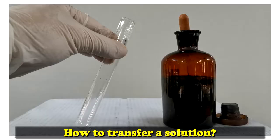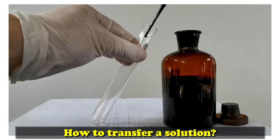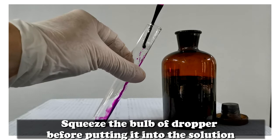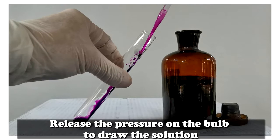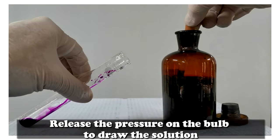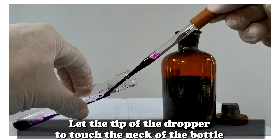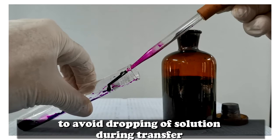How to transfer a solution? Squeeze the bulb of the dropper before putting it into the solution. Release the pressure on the bulb to draw the solution. Let the tip of the dropper touch the neck of the bottle. This is to avoid dropping of the solution during transfer.